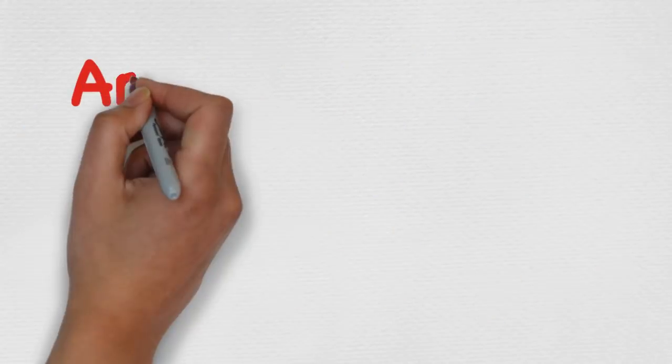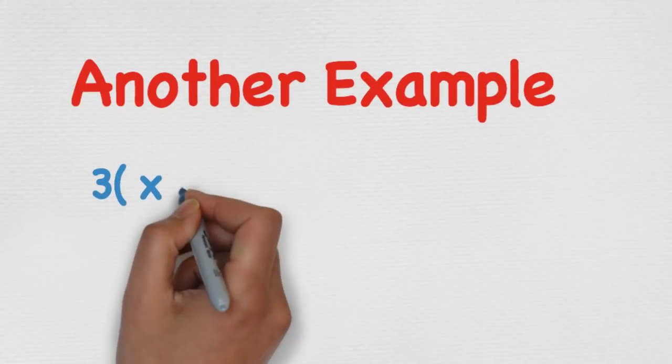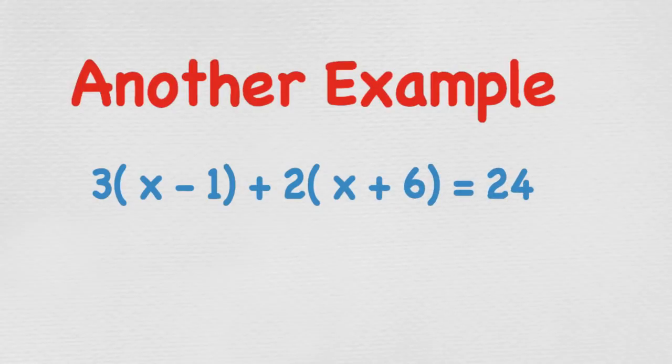Okay, let's look at another example which is a little bit harder. So we've got 3(x - 1) + 2(x + 6) = 24. Let's quickly recap the three steps again.